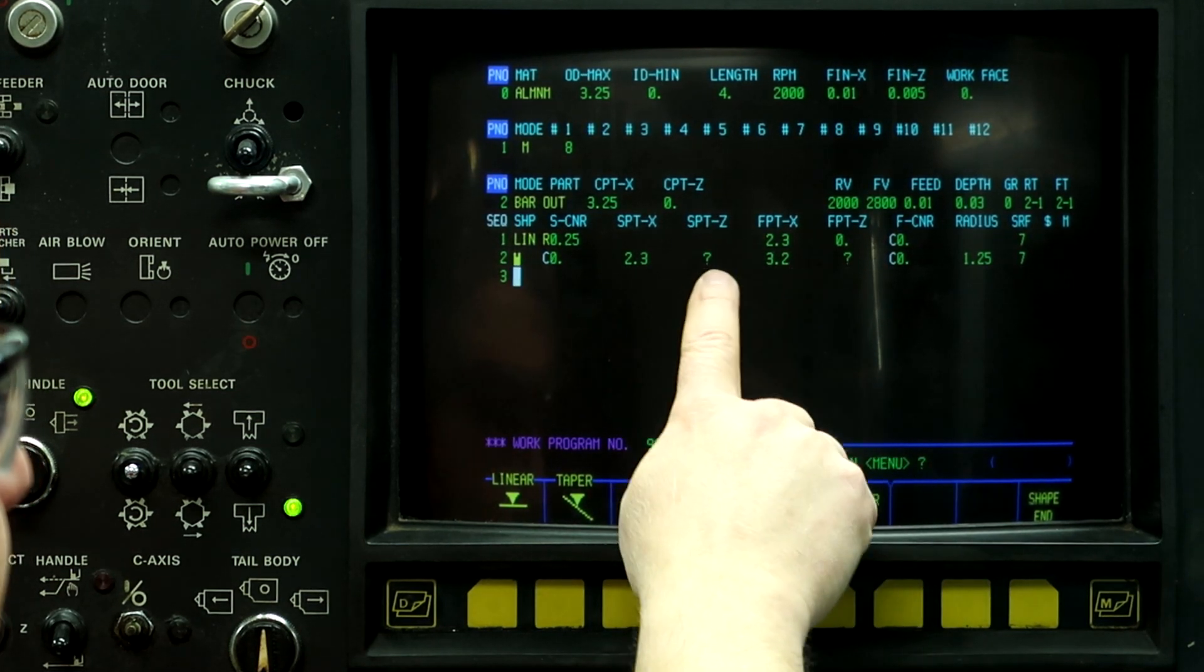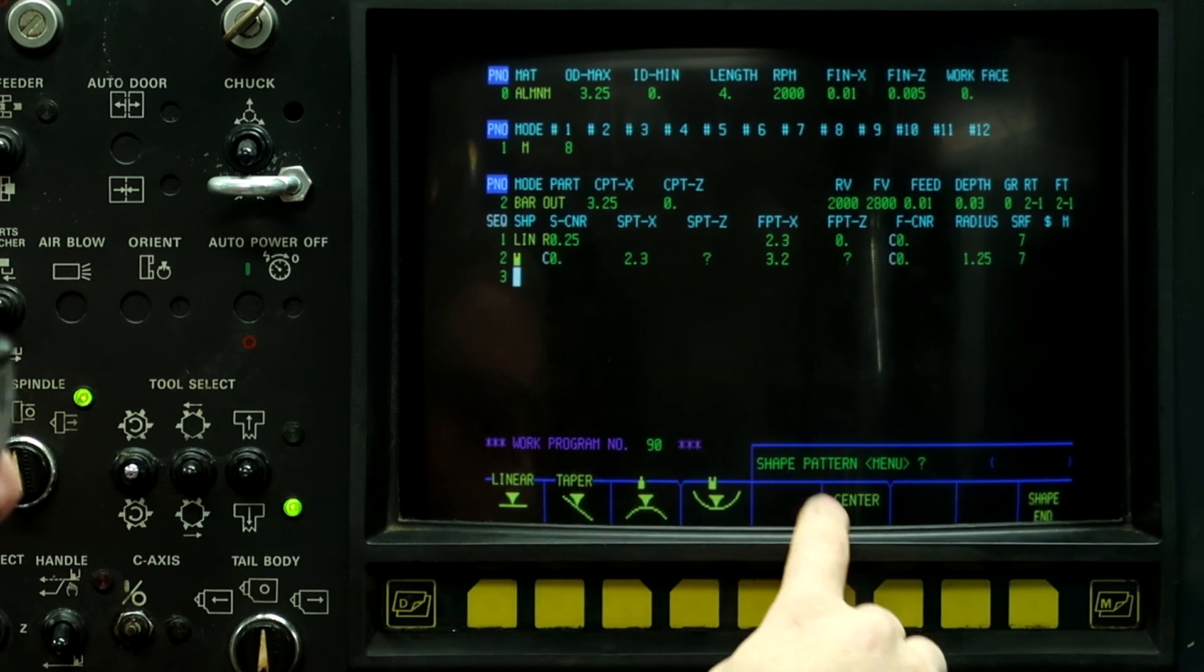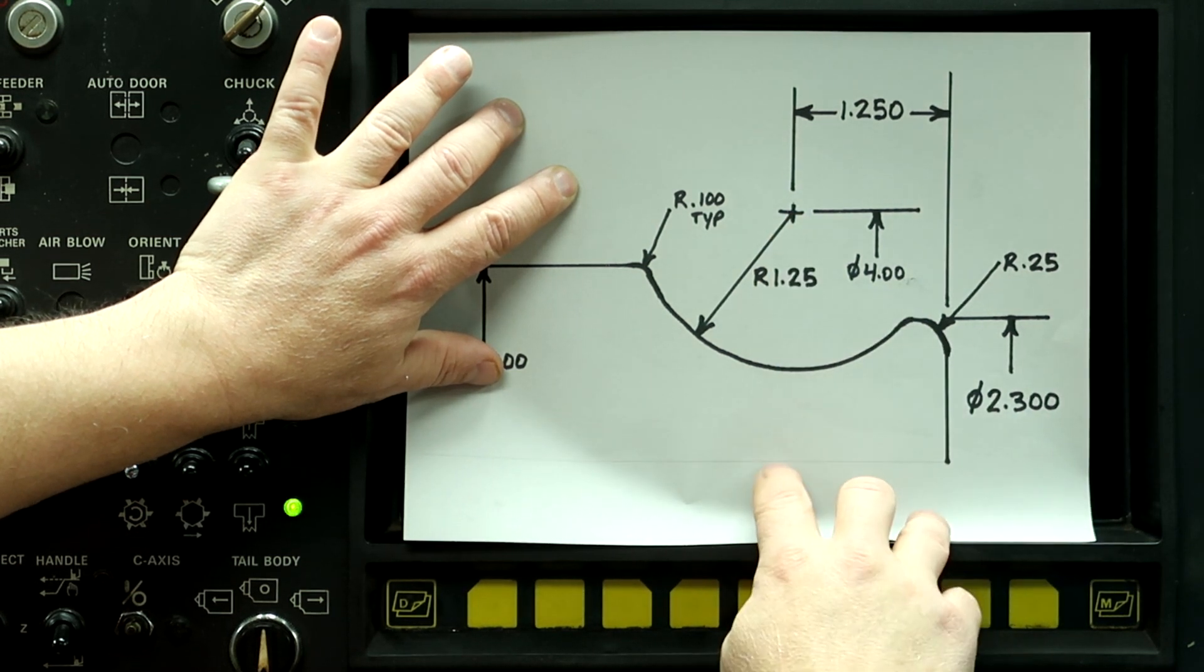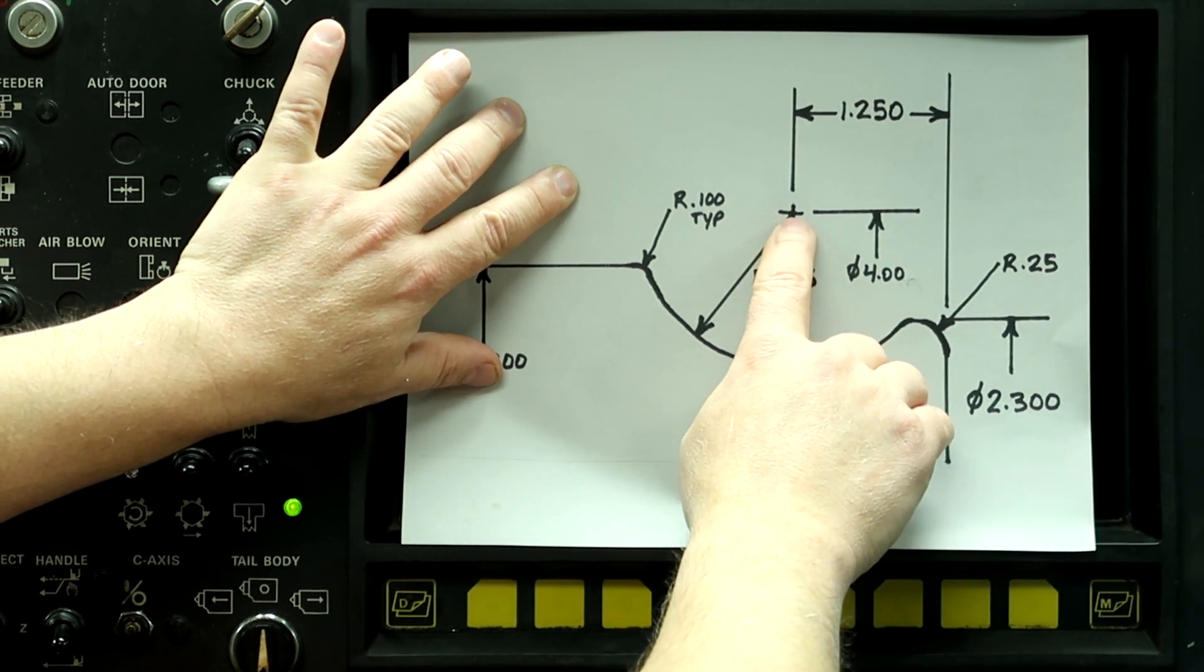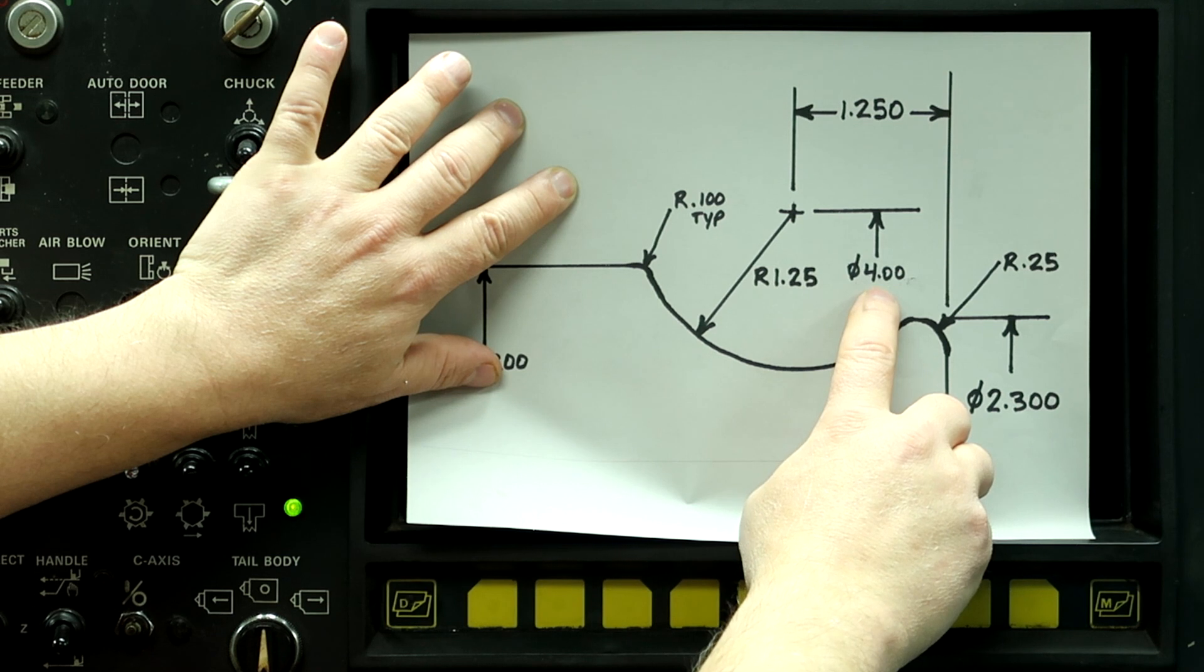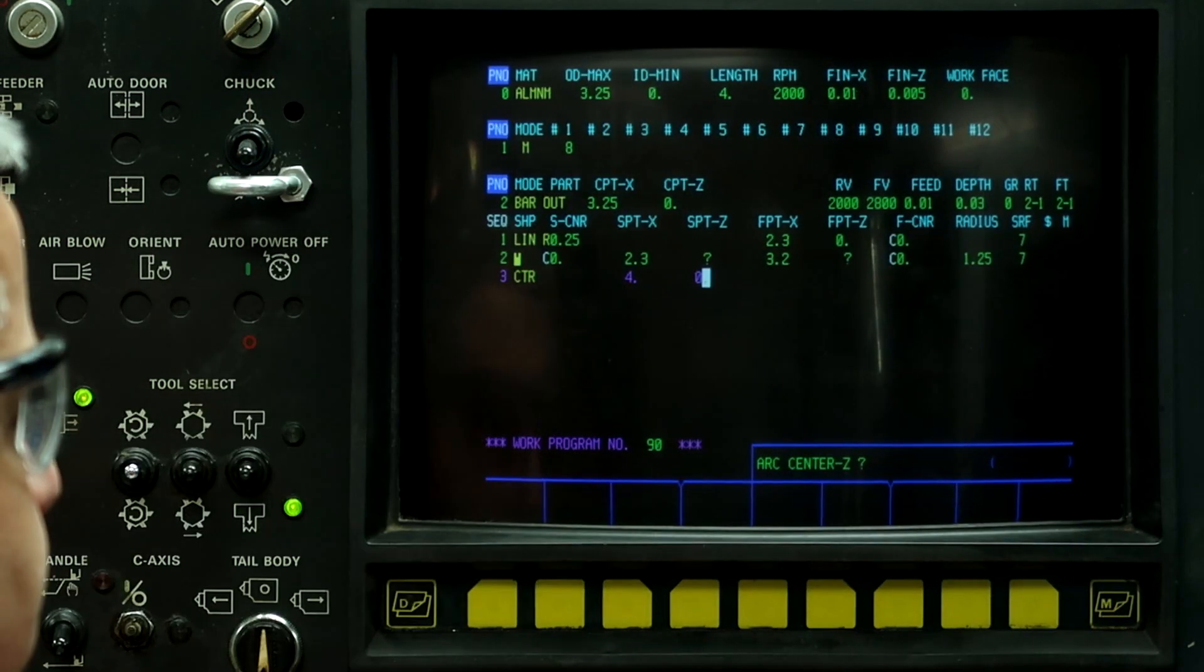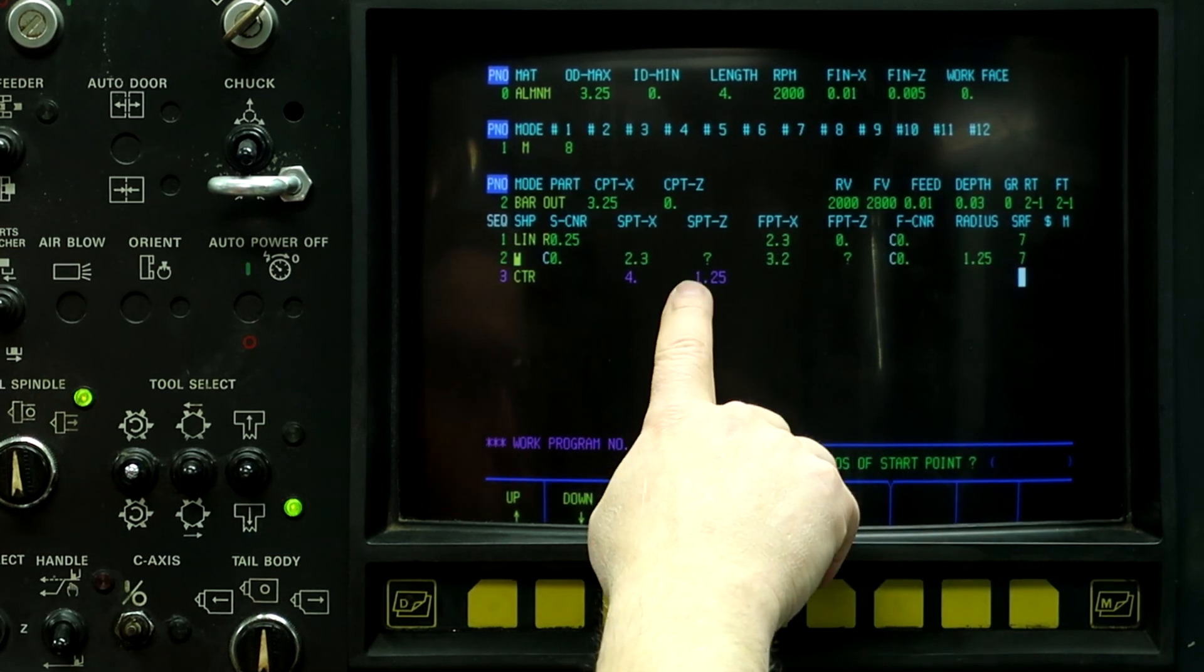So now when we have question marks, we need to tell it the center of where this radius lies in relation to the machine coordinate system. So push center. Arc center X, the center of this arc is, as a radius, two inches from the middle, but the machine calculates this position as a diameter. So the diameter of that center point is 4 inches in diameter. Arc center Z, from the face of the part, it's 1 inch, 250 back.